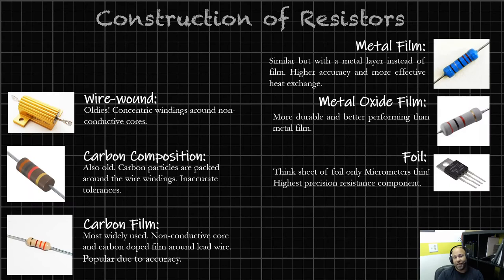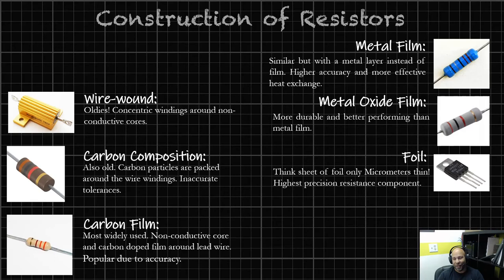Let's talk about the construction of resistors, taking a walk down memory lane from early resistors to the most common ones found today. First: wire wound — the original oldie but goodie. Concentric wires twisted around non-conductive cores. More twists with thinner wire; early scientists found they could lessen current by doing so. You probably won't find these in the wild outside of niche projects — consumer goods won't have wire wound resistors.